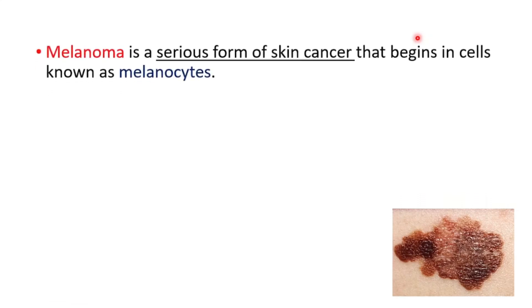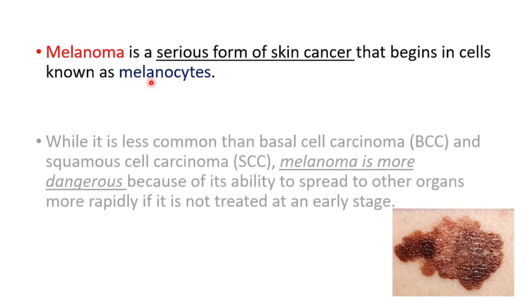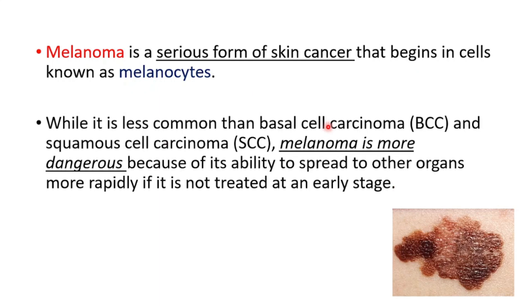Today we're going to talk about melanoma. It's a serious form of skin cancer that begins in cells known as melanocytes. While it's less common than basal cell carcinoma and squamous cell carcinoma, it's more dangerous because of its ability to spread to other organs more rapidly if it's not treated at an early stage.